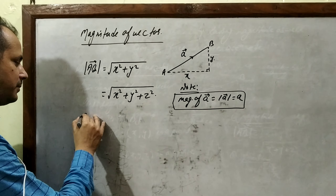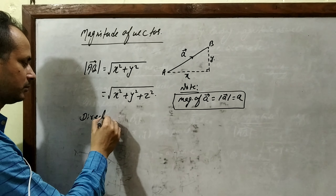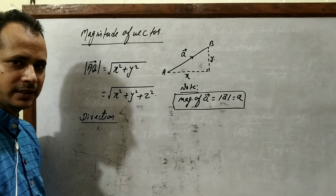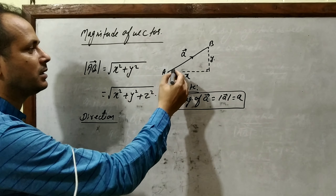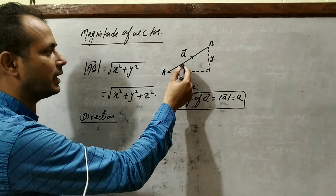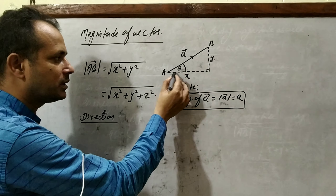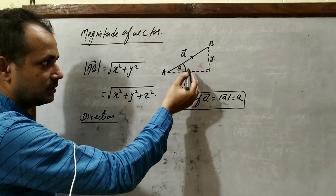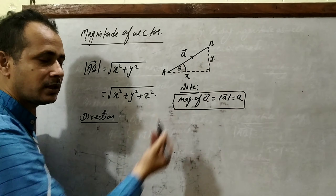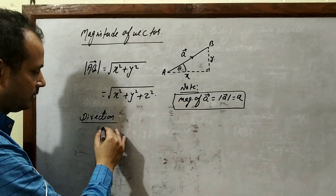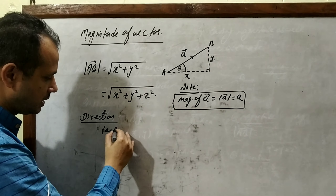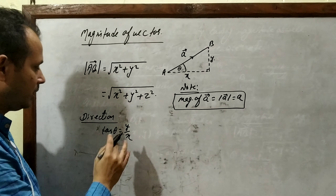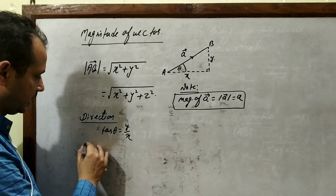Next point: direction. How do we find direction? If the vector is a plane vector, the angle made by the vector line with the x-axis is in fact its direction. To calculate the value of theta, we can take help of trigonometry and write tan θ = y/x. Next point is direction cosine.